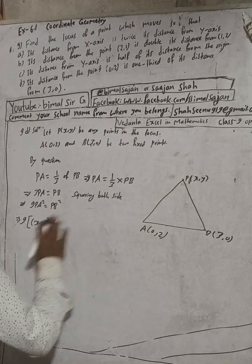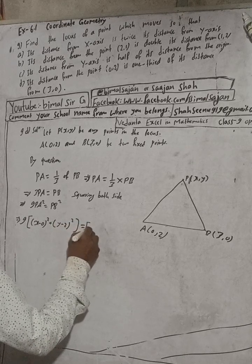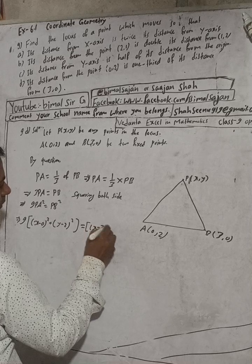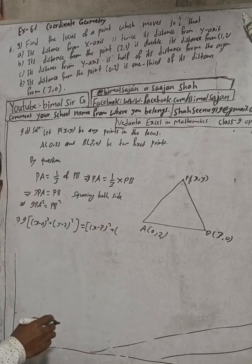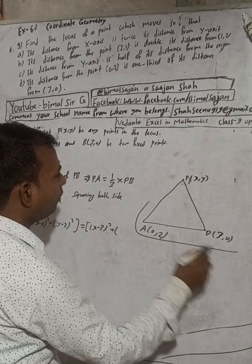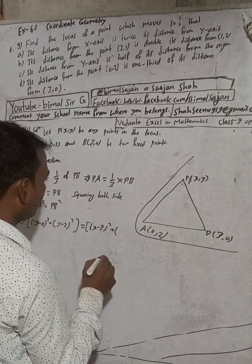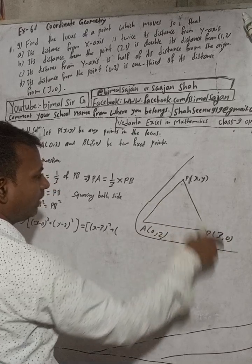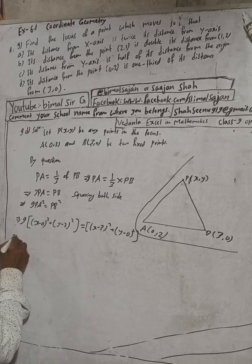Applying the distance formula: (x - 0)² + (y - 2)² on the left side equals (x - 3)² + (y - 0)² on the right side, before multiplying by 9.